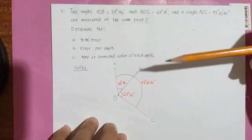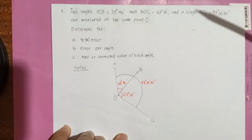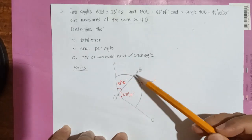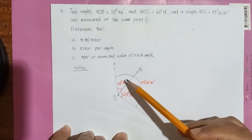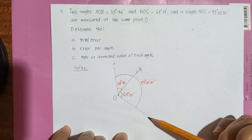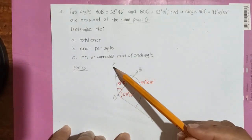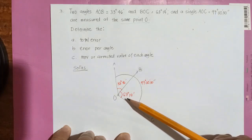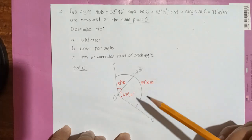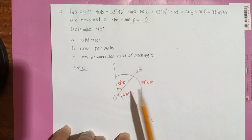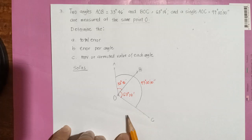Why is it redundant? It is redundant because if you just measure angle AOB and angle BOC, you can already determine what angle AOC is. Or you can measure angle AOC and angle AOB to determine angle BOC. So it is called redundant because it's a redundant measurement — you measured something that could already be determined without the extra measurement.